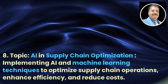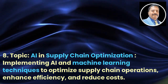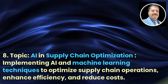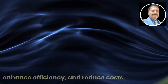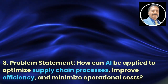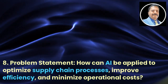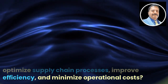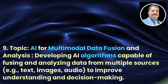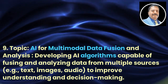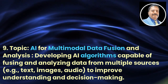Topic 8: AI in Supply Chain Optimization. Implementing AI and machine learning techniques to optimize supply chain operations, enhance efficiency, and reduce costs. Problem statement: How can AI be applied to optimize supply chain processes, improve efficiency, and minimize operational costs?